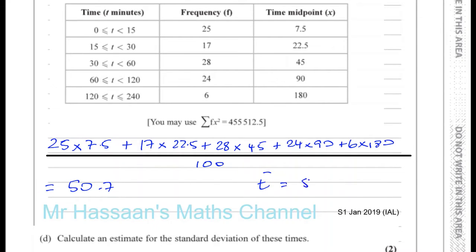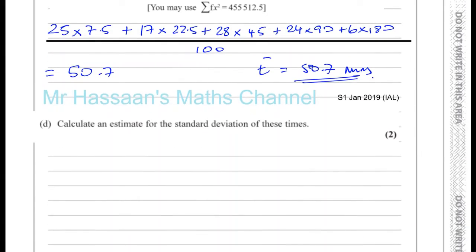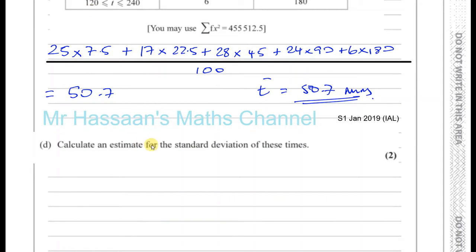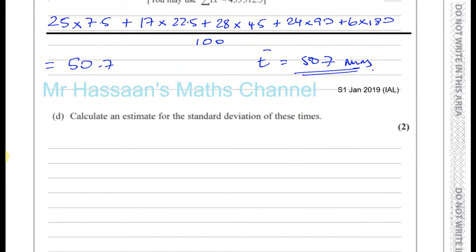So the mean time is 50.7 minutes. That's part c. Now part d says: calculate an estimate for the standard deviation. The standard deviation is a measure of how far each data point is from the mean, and it's given by the formula: the mean of the squares minus the square of the mean.